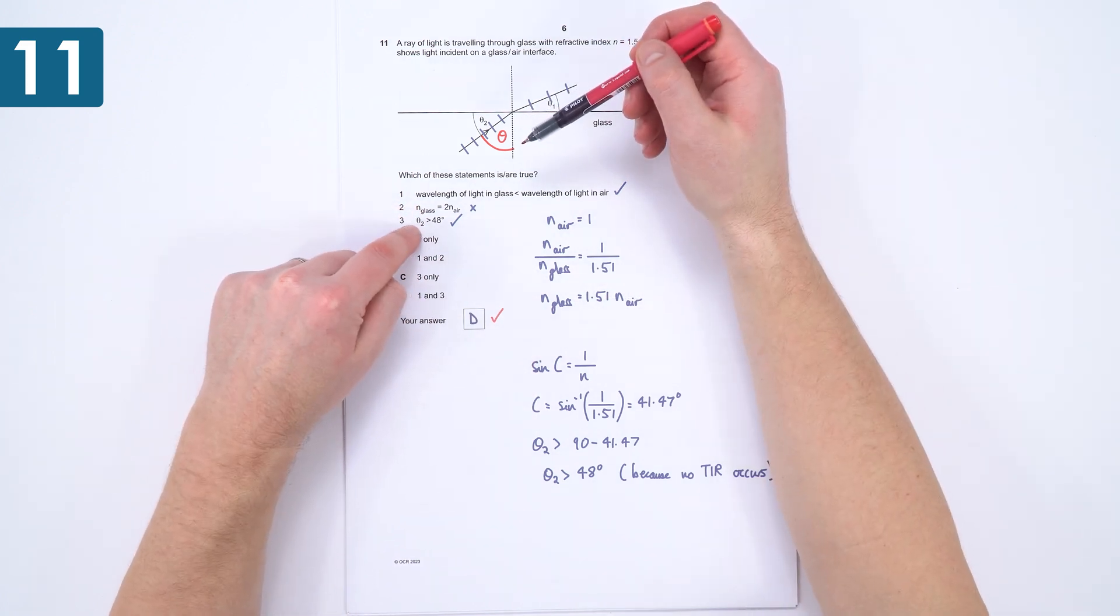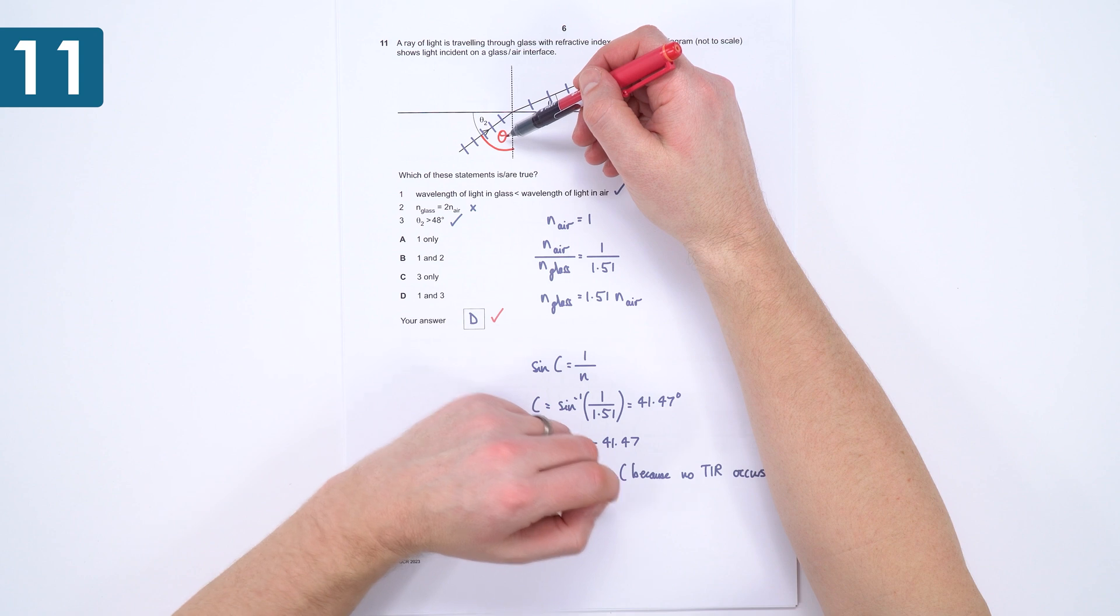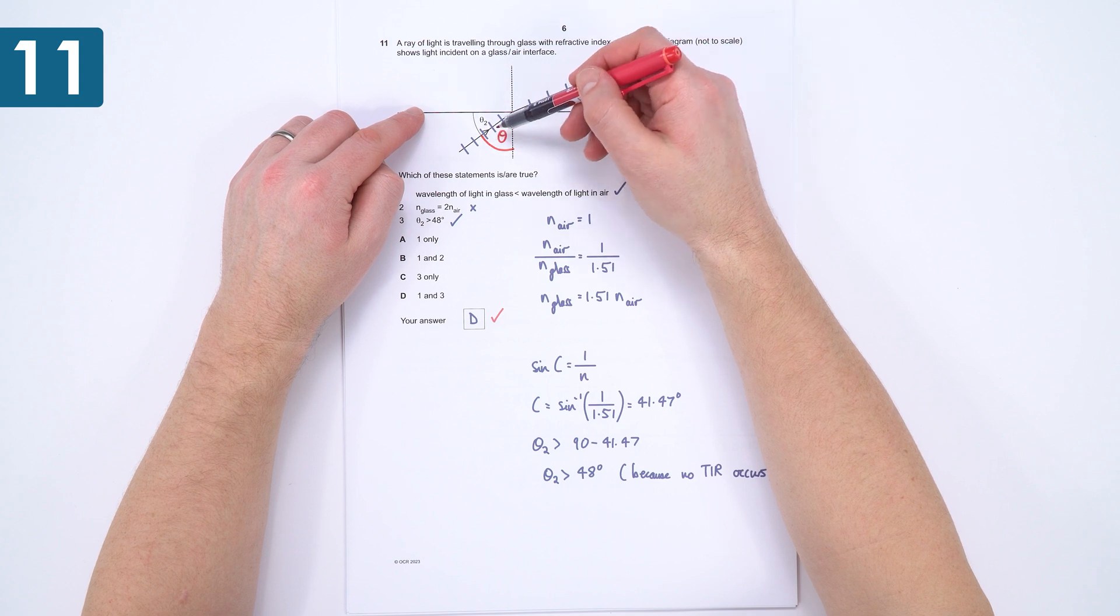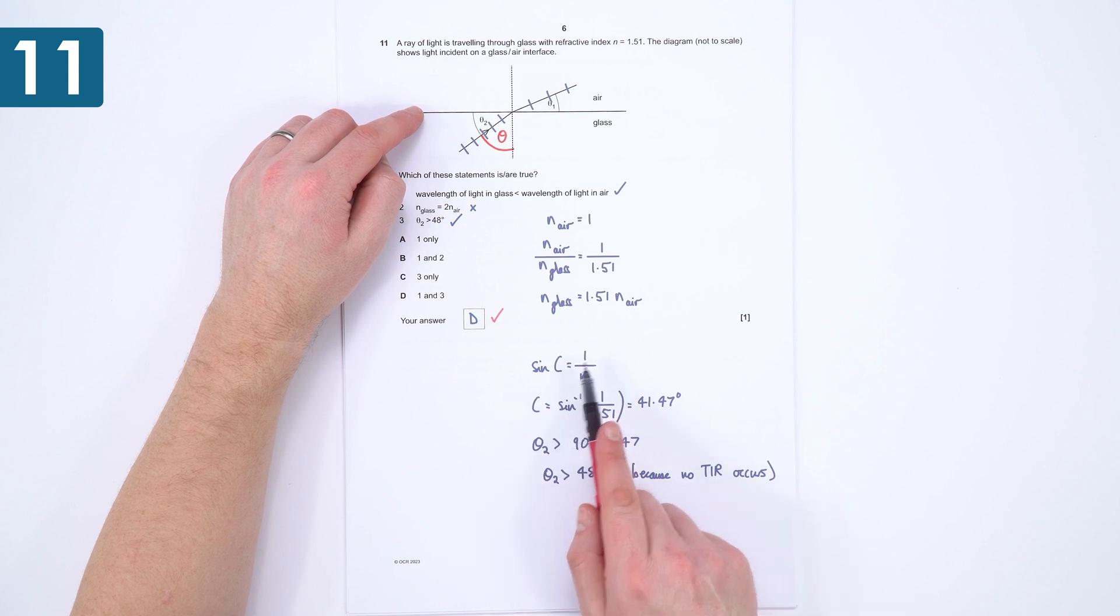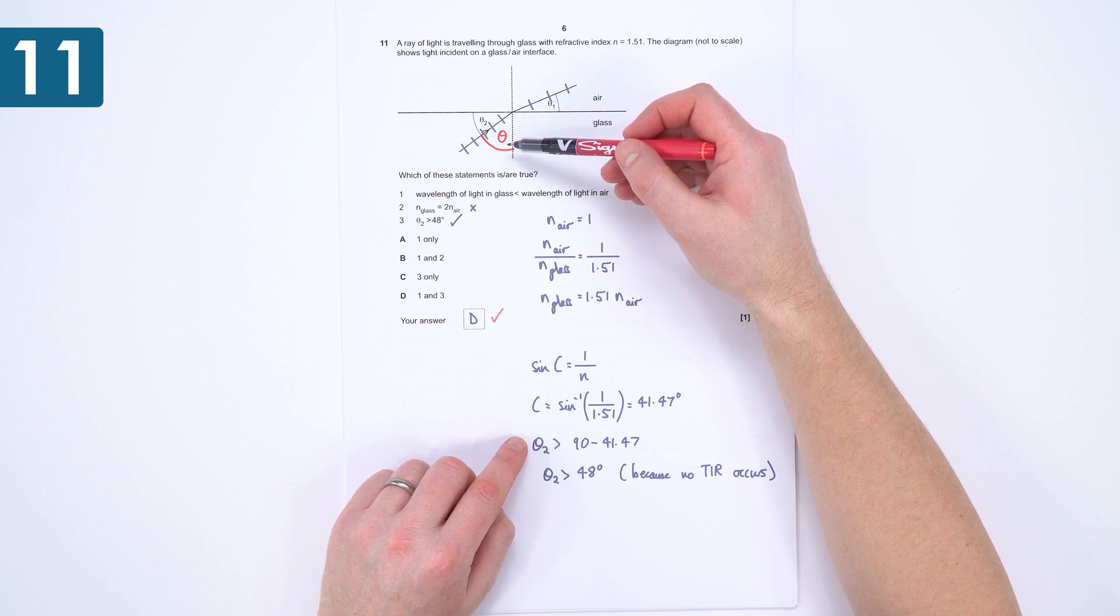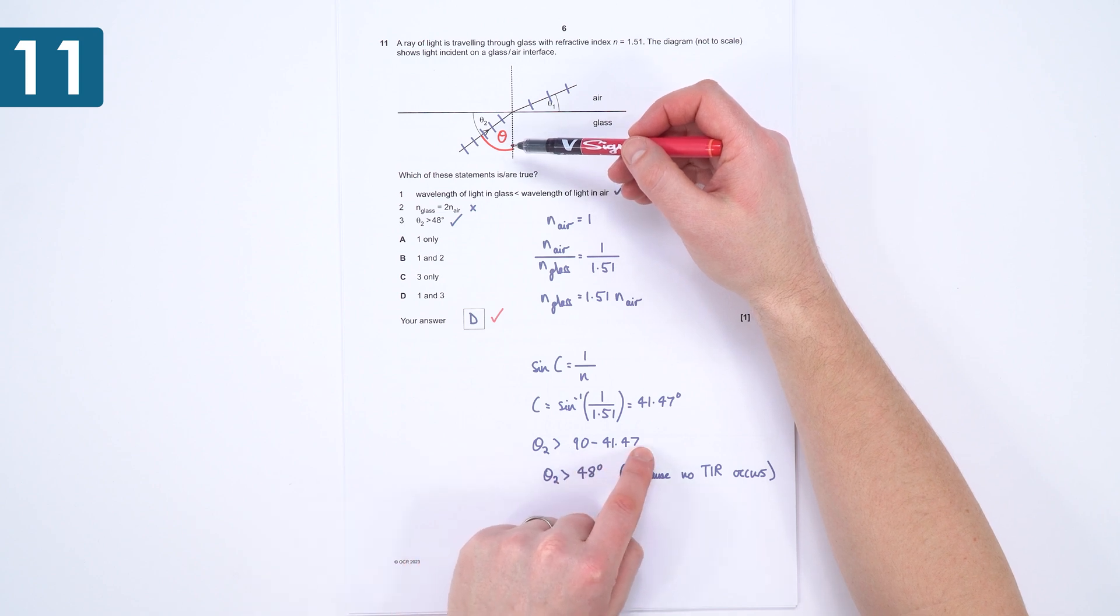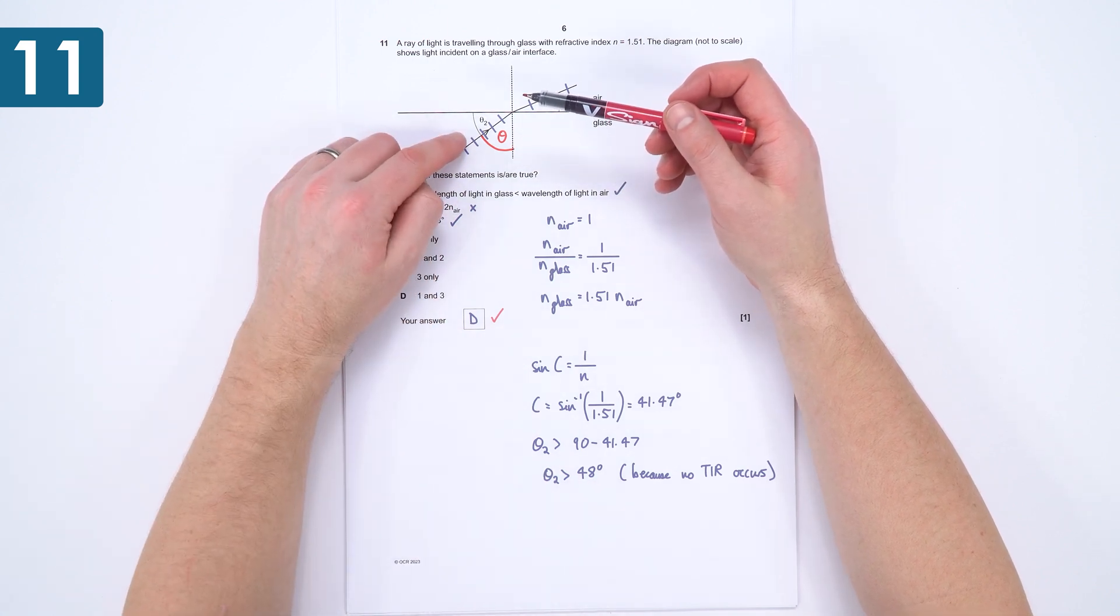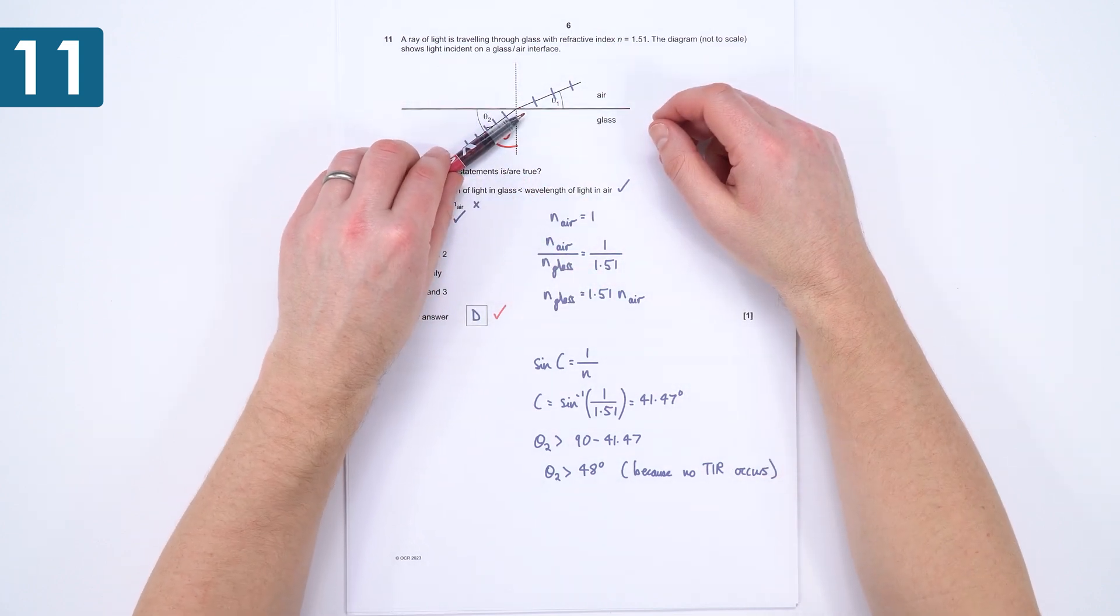But this last statement is where most people got thrown, because normally the angle theta that's mentioned is the critical angle or the angle of incidence, but here they gave the value of theta 2 as this angle between the surface or the interface between these two materials and the line. So I think that's what threw most people. Now of course we know that the critical angle is 1 over n, so we can work out the critical angle as 41.47. Now that means theta must be bigger than 90 minus 41.47, so theta 2 is going to be bigger than 48, and that's because no total internal reflection occurs.